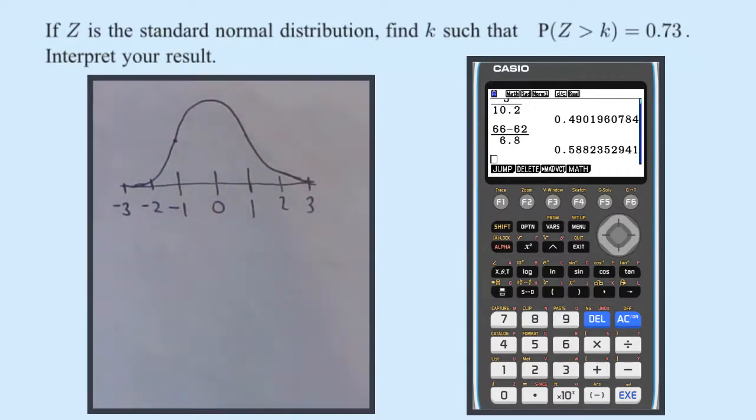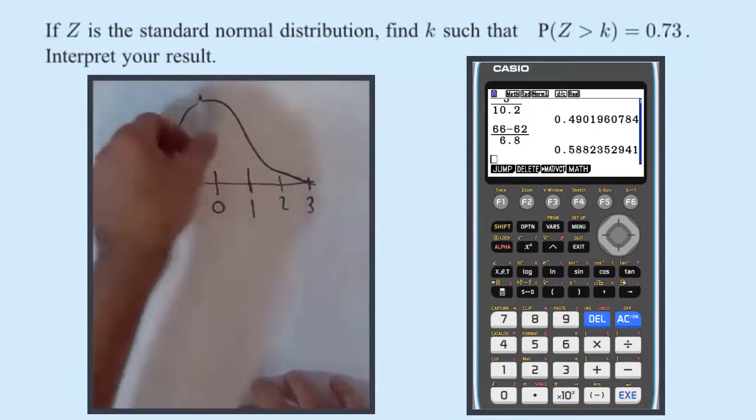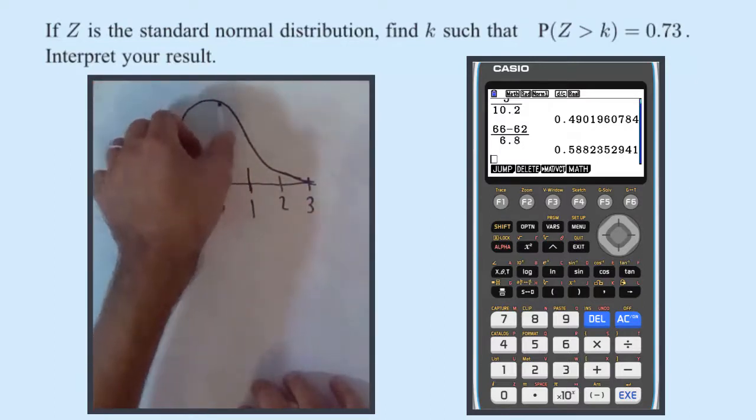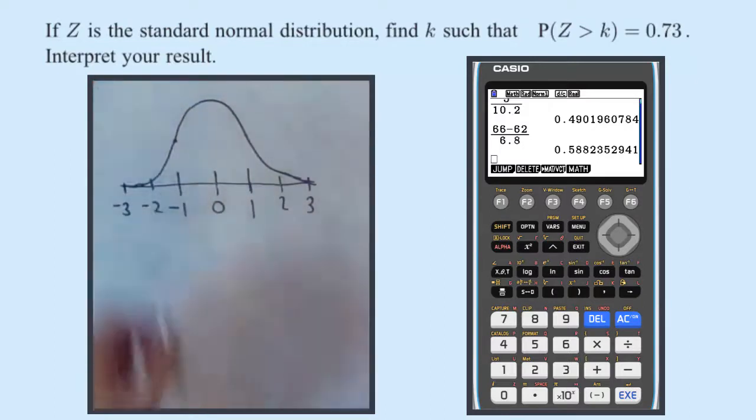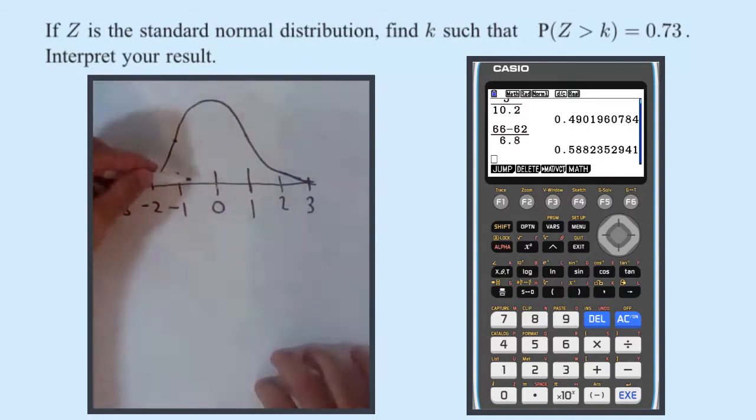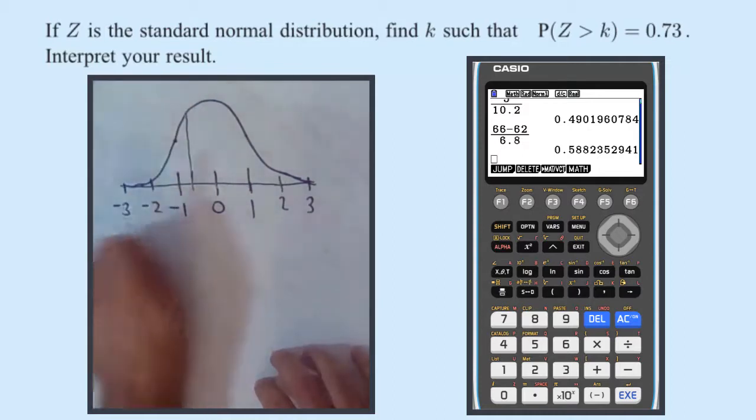So we want to find a k such that the probability Z is greater than k is 0.73. So if you think, if I drew a line here in the middle well that's 0.5 right. So I reckon it's got to be somewhere in here and obviously if you were just doing this question you wouldn't have all of these lines anyway.